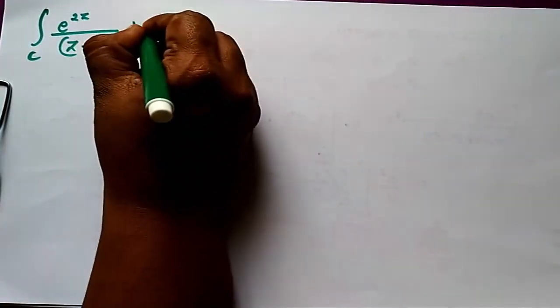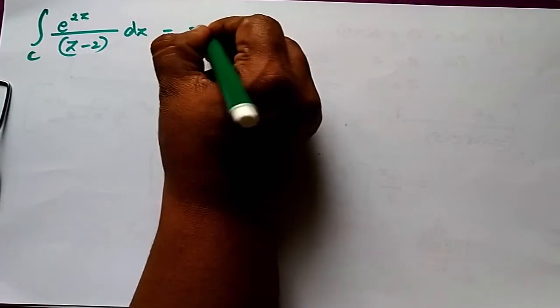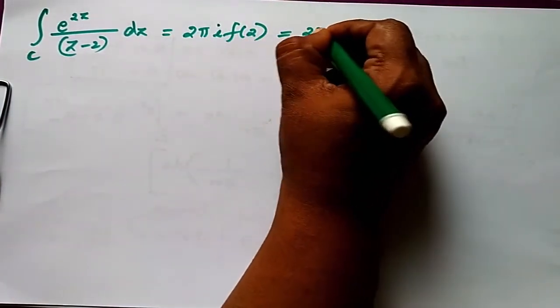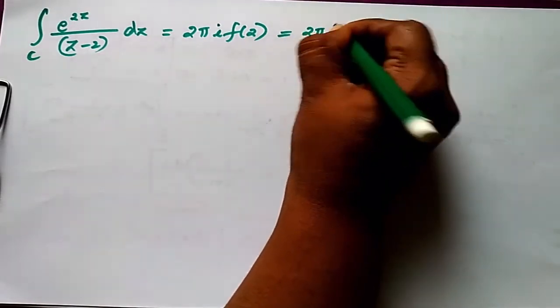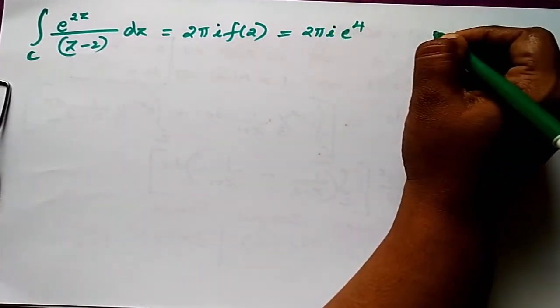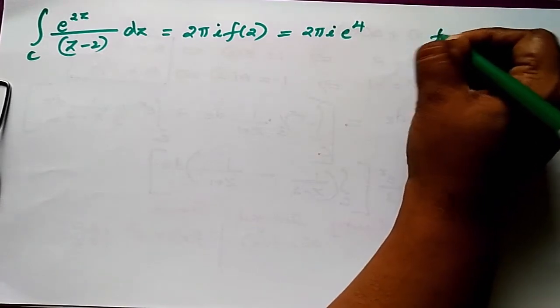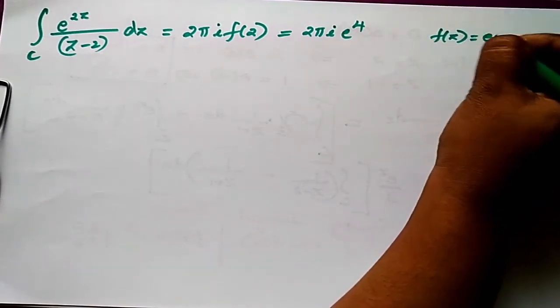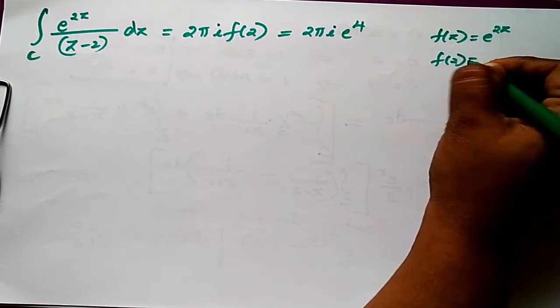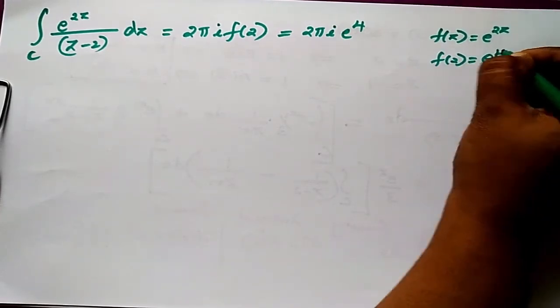For the first part: integral c of e^(2z)/(z-2) dz = 2πi · f(2) = 2πi · e^4, since f(z) = e^(2z) and f(2) = e^4.